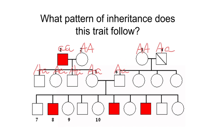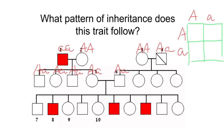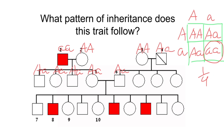If two parents are carriers, then we can draw a simple Punnett square — one parent carrier, another carrier. We get: capital A / capital A, capital A / small a, capital A / small a, and small a / small a. So we expect that one quarter of the progeny are going to be affected.